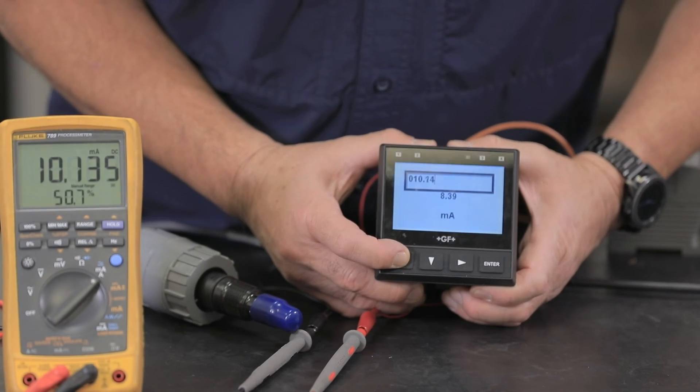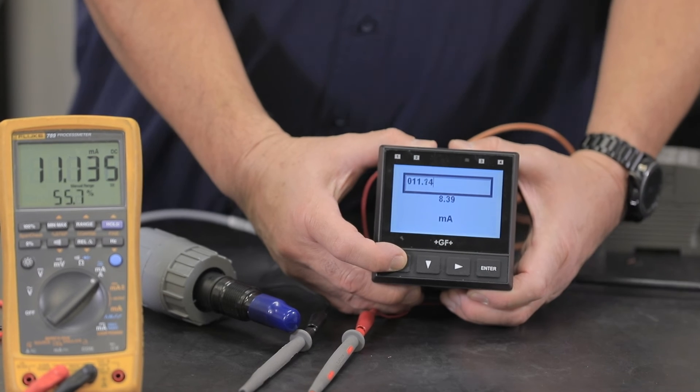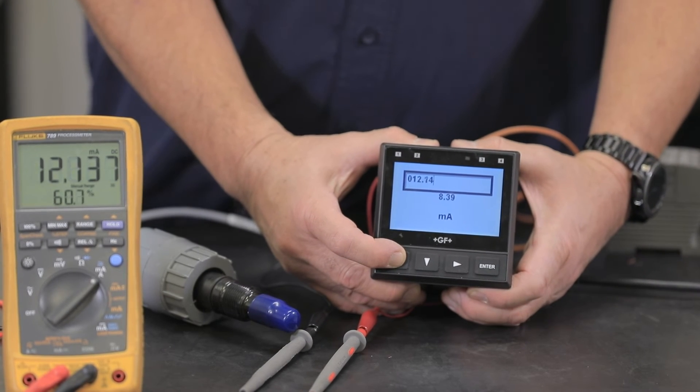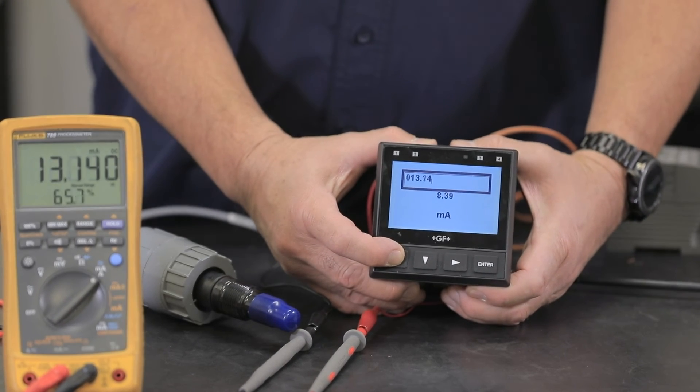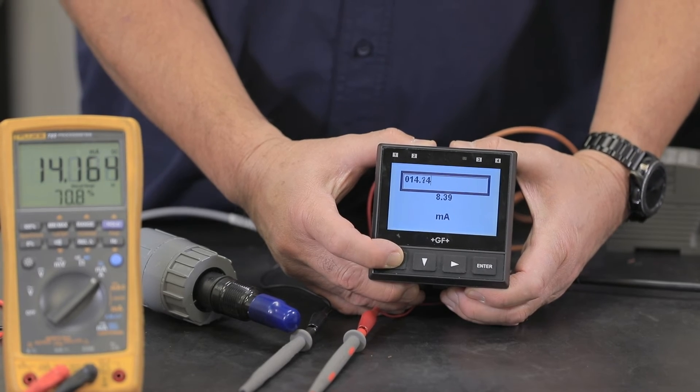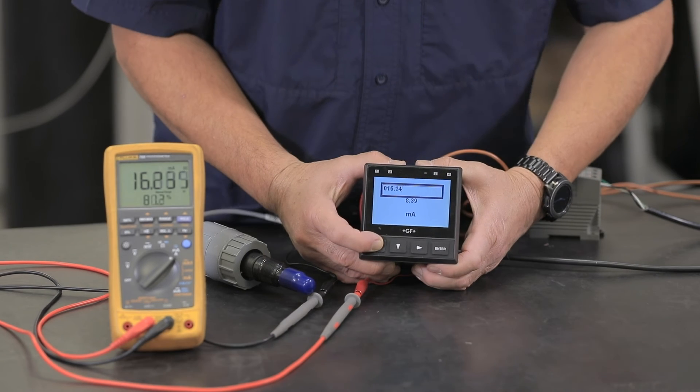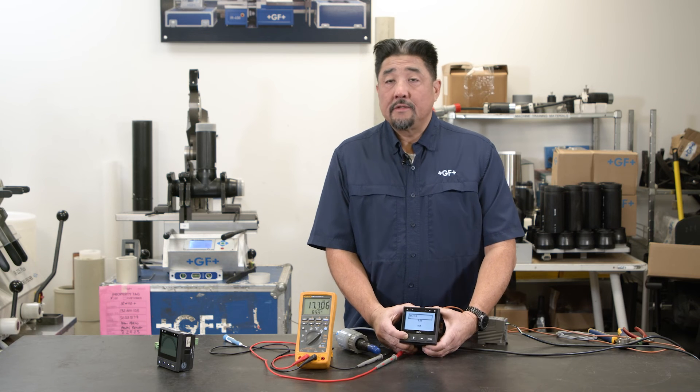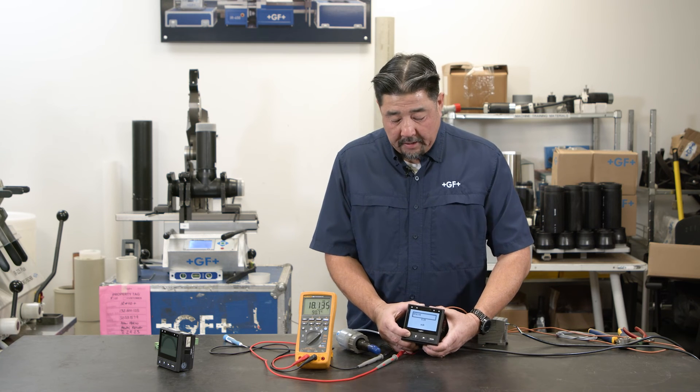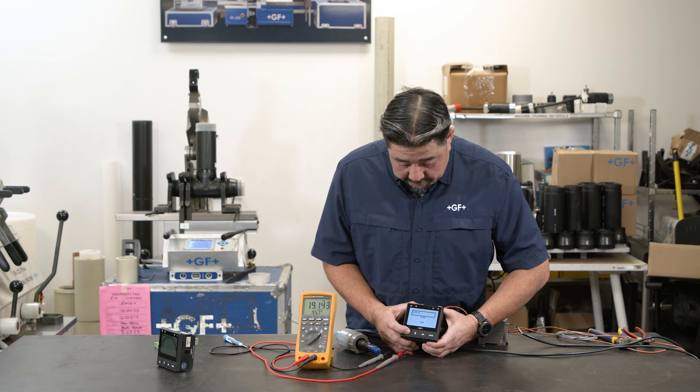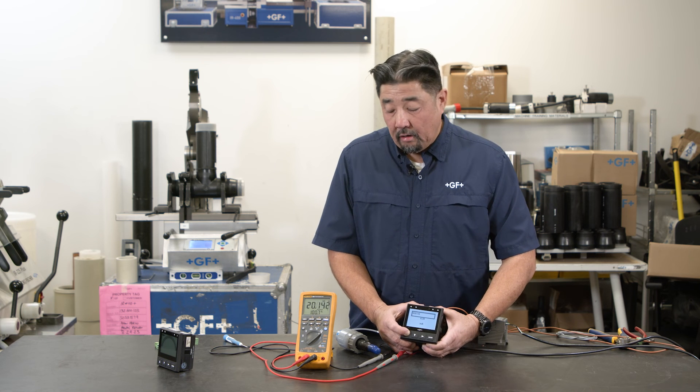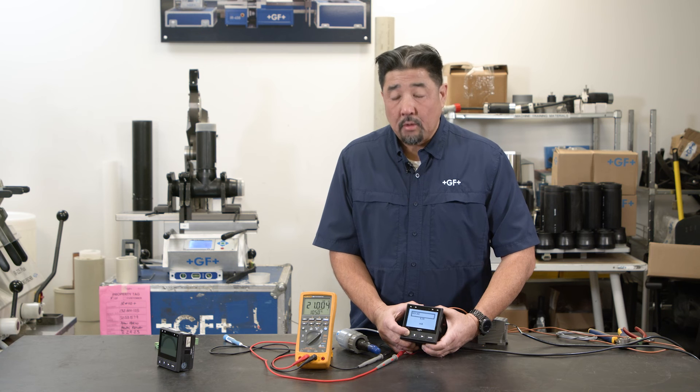And here as a signal generator I can manually set the 4 to 20 output. So if we're working with a 4 to 20 milliamp device and we don't know what the scaling is, we can manually ramp this up to 20 milliamps to see what our PLC or our HMI is displaying for 20 milliamps. It'll allow us to scale our 9900 or 9950 accordingly.